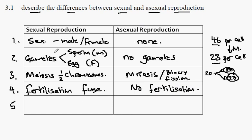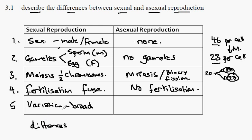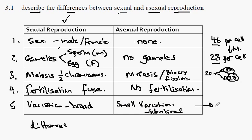Finally, if we examine the population of a sexually reproducing organism, we find broad variation — that is, many differences among individuals. Asexually reproducing populations show a small amount of variation due to mutation, but by and large they are identical. This is otherwise known as a clone.